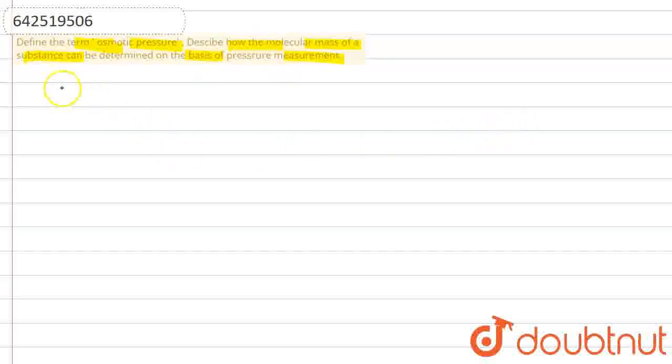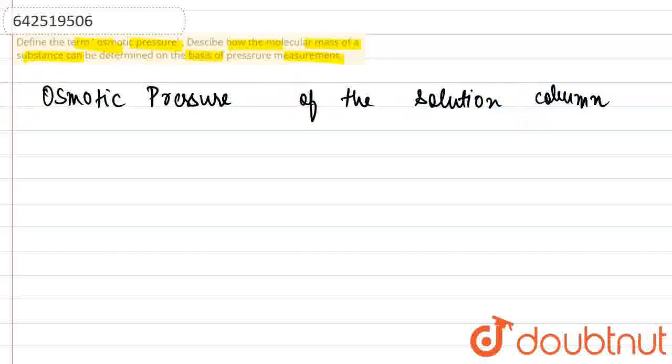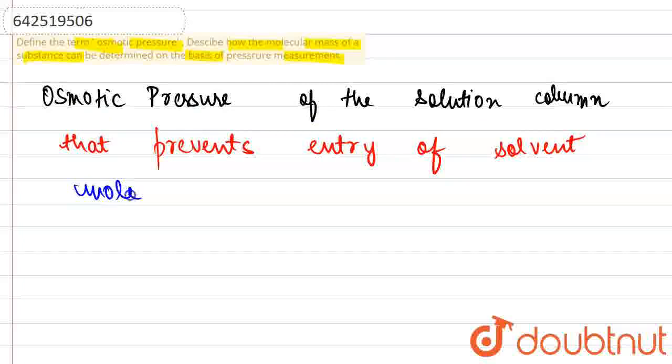So we know that the term osmotic pressure - let's write it down first. Osmotic pressure of the solution column is that which prevents the entry of solvent molecules from one side to another via a semi-permeable membrane.